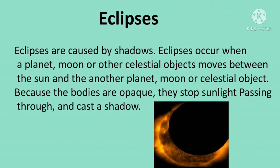During a solar eclipse, the moon moves over the sun during the day and it gets dark. This total eclipse happens about every year and a half somewhere on Earth. A partial eclipse, when the moon doesn't completely cover the sun, happens at least twice a year somewhere on Earth.